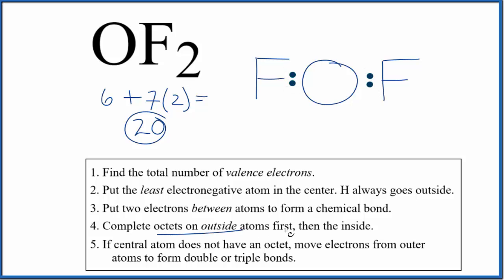Then we'll complete the octets on the outside atoms first. Those are the fluorines, which need eight valence electrons each. So far we've used 16 valence electrons, and the fluorines have octets.